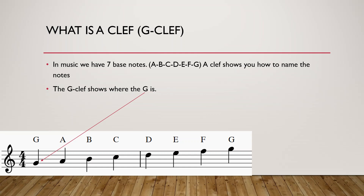In music we have seven basic notes: A, B, C, D, E, F, and G. No matter which clef we are in, A, B, C, D, E, F, and G are always the notes. When we have a G clef, it tells us that the second line from the bottom is a G. So this is a G.